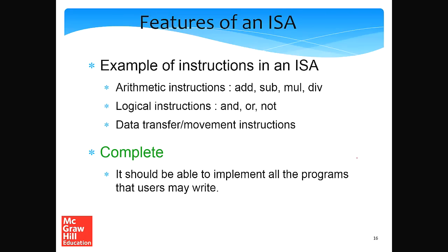What are examples of instructions in an ISA? Arithmetic instructions: add, subtract, multiply, divide. Logical instructions: AND, OR, NOT. And data transfer instructions to move data between memory and the CPU. What are the desirable features of an ISA? The most critical feature is that it needs to be complete — it should be possible to implement all programs that users may want to write, whether reading today's temperature, sending it over the internet, or recognizing characters from a photograph.